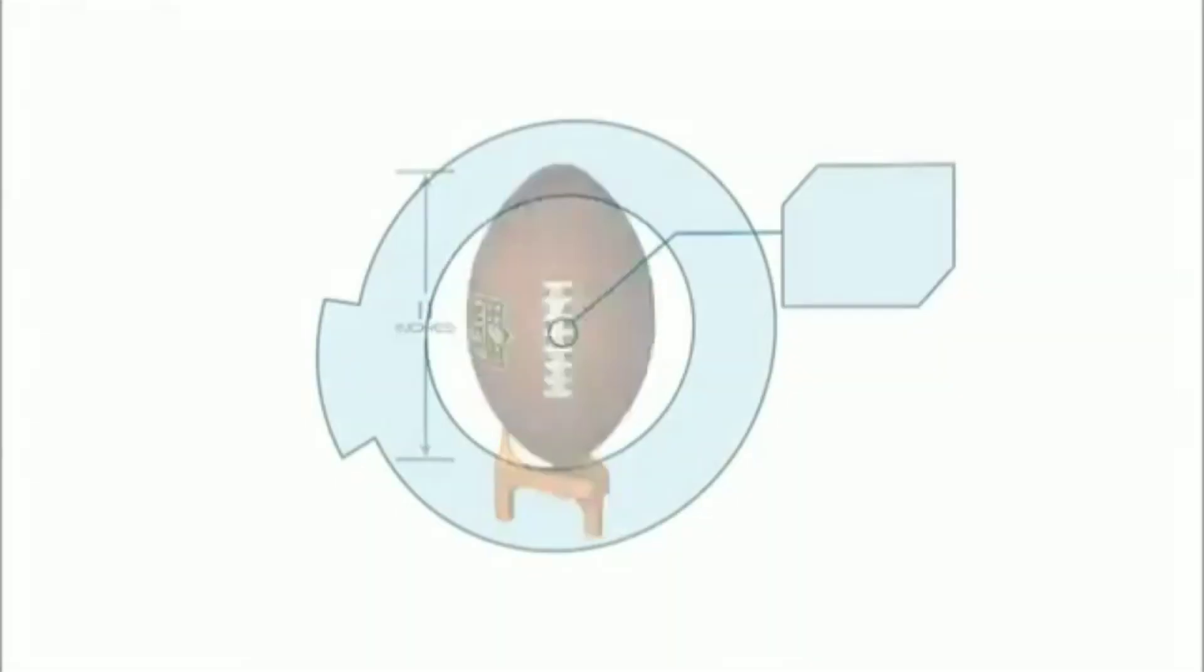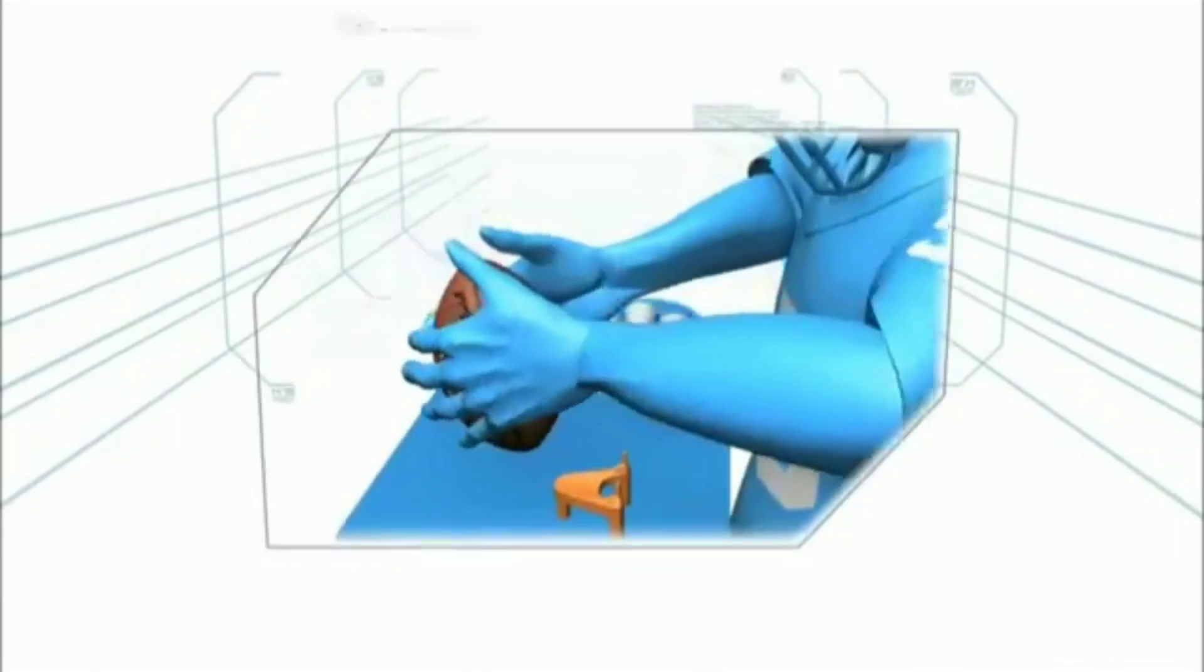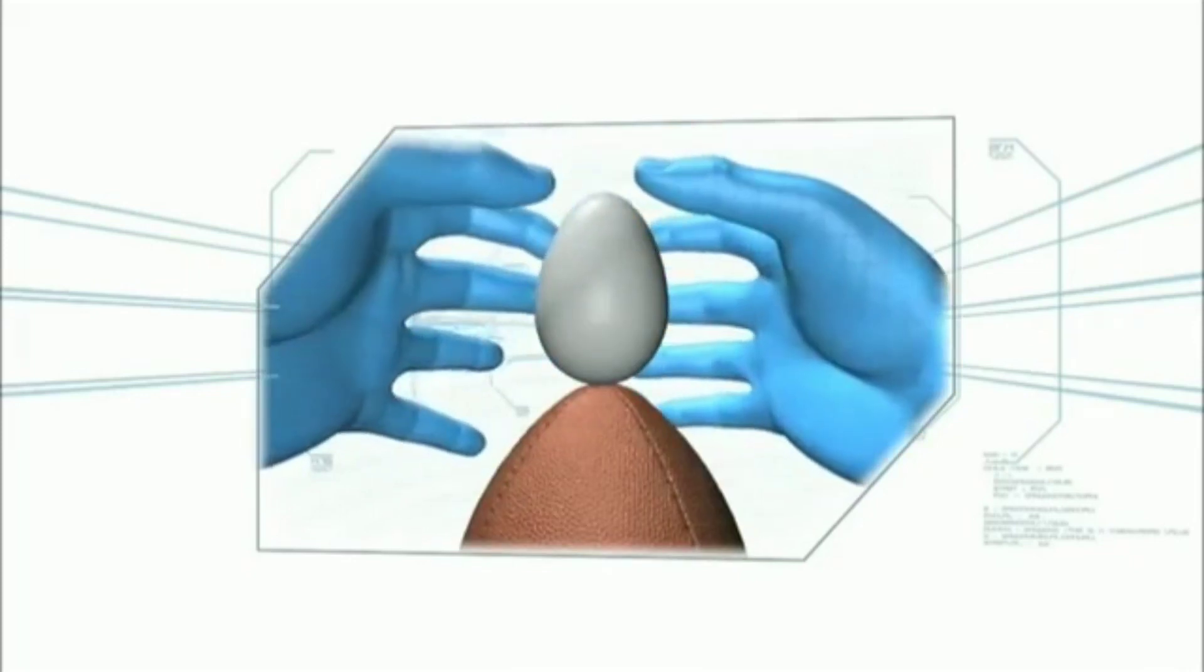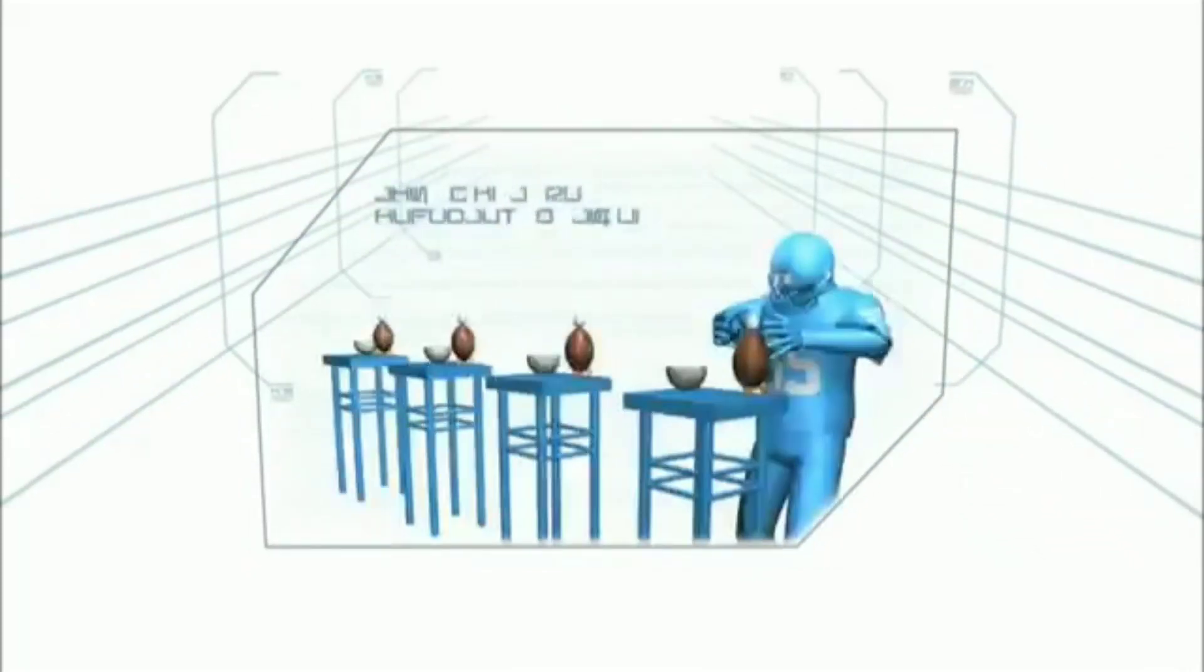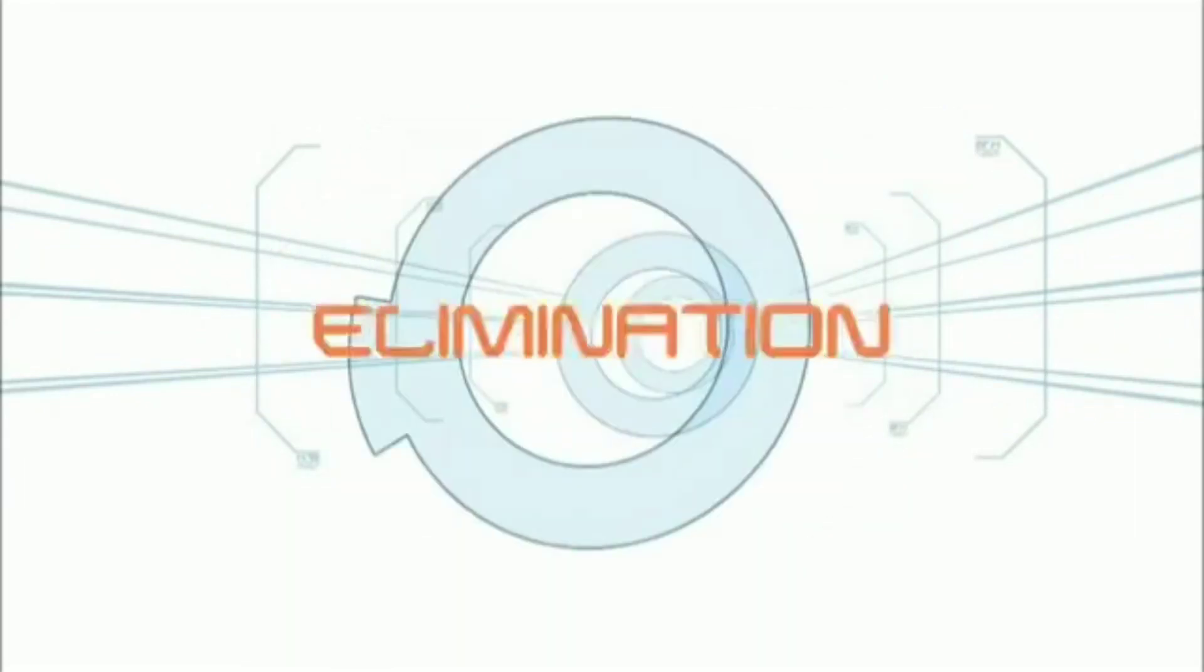An NFL football is 11 inches tall and made in the USA. An egg is approximately 2 inches tall and made by a chicken. In this challenge, the contestant will unite these oval-shaped items by carefully balancing one on the end of the other. This must be repeated four times. Failure to complete this task in 60 seconds may result in elimination.